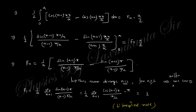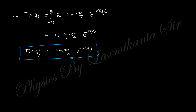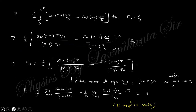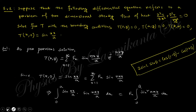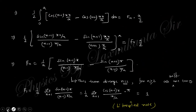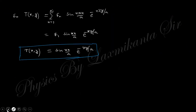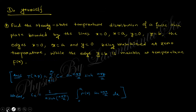Only F_1 is present and equals 1. Putting this value of F_1 into the general solution, the total solution is T equals sin(πx/a) · e^(-πy/a). This is clear about the solution process — when a particular function is given, you can find the solution this way. If there is any doubt, please comment in the comment box. This is your homework.